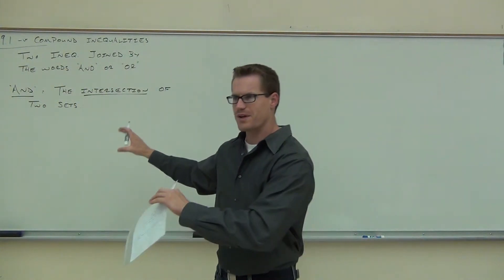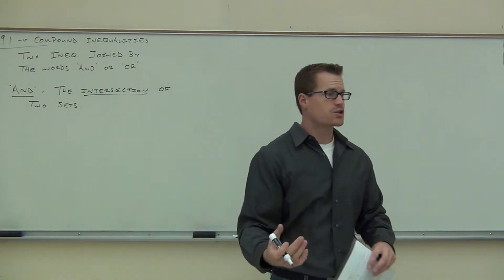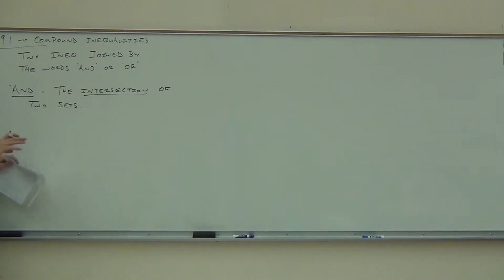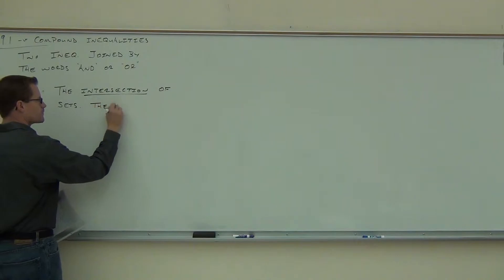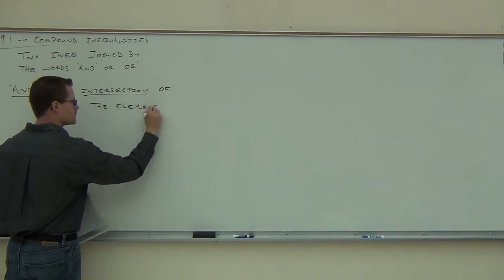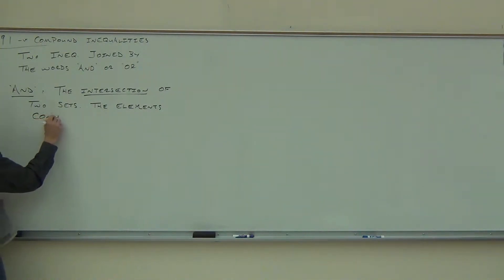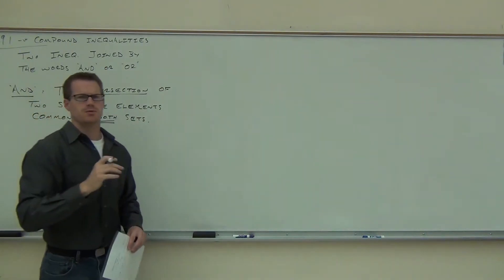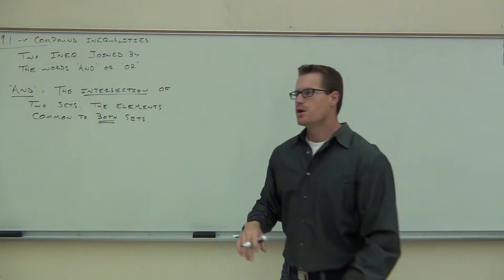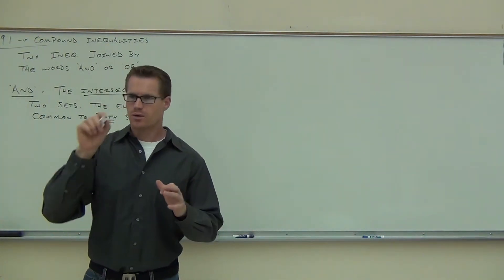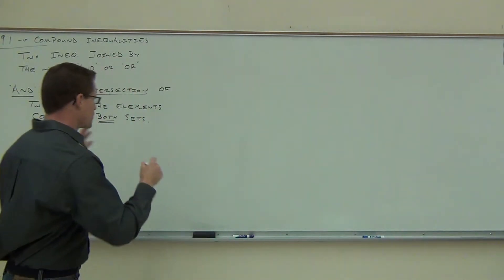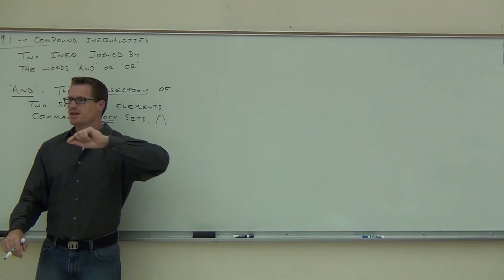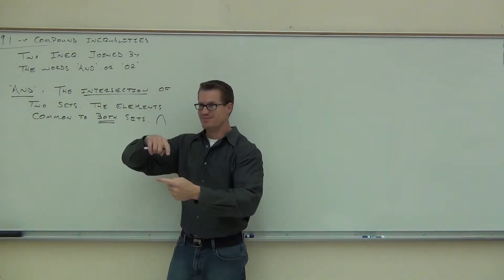So we're going to talk about 'and' as the intersection of two sets. The intersection comes from a Venn diagram. The intersection simply means: if you're going to intersect two sets, what's in common to both of them? It's the elements that are common to both sets. We use a symbol for this — when talking about the intersection, it looks almost like an upside-down lowercase letter N, except it doesn't have a little tail on it. It's the intersection of two sets. You can think of it as intersection — that's why we use the little N part.